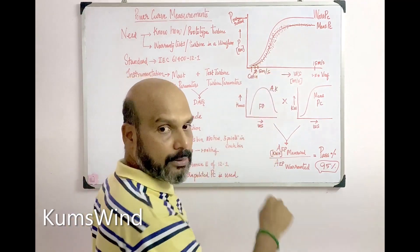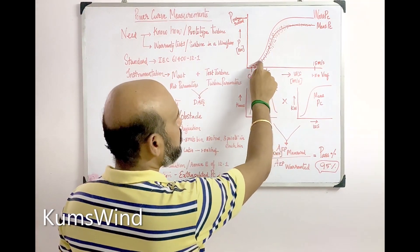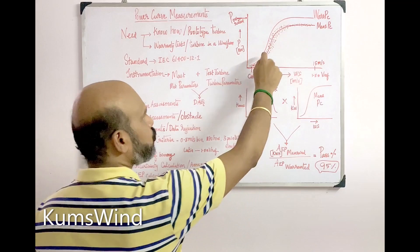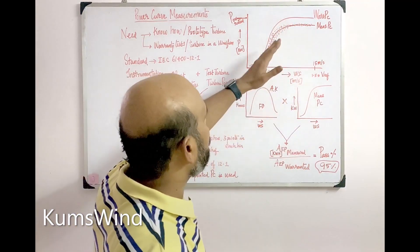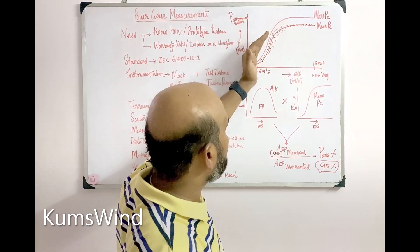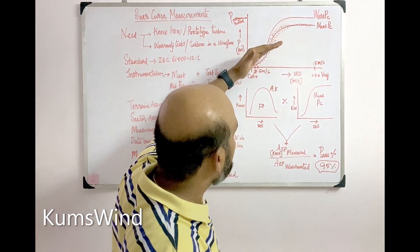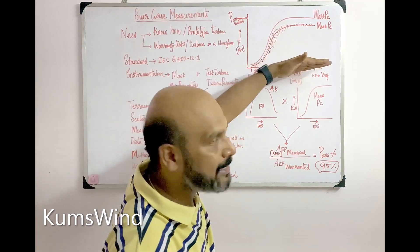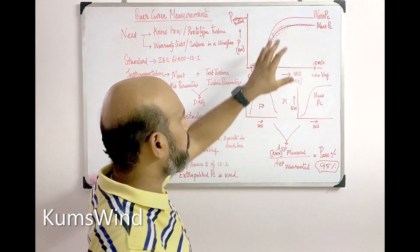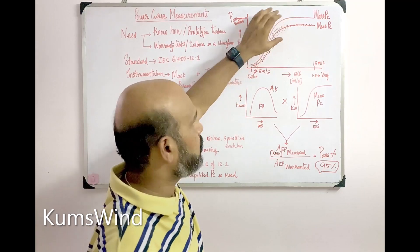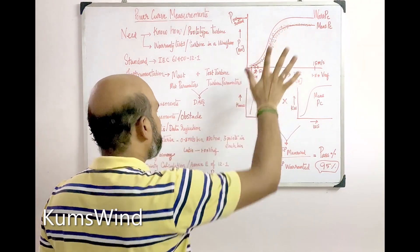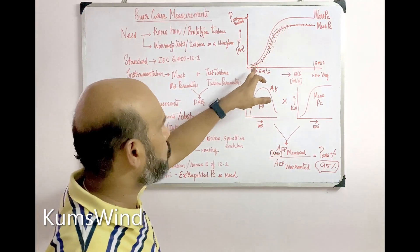Each point on the scatter plot represents a 10-minute average: for a given wind speed you have a corresponding power value. You have many such points forming a scatter plot. When you plot the scatter, you can see a mean scatter, and there will also be a maximum, minimum, and standard deviation. For convenience, the mean of the 10-minute intervals is plotted rather than all statistical parameters.